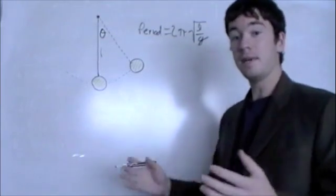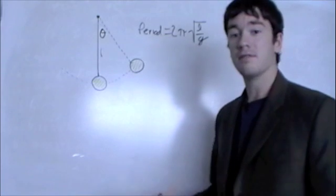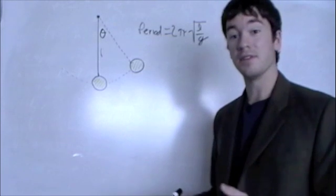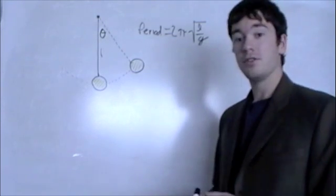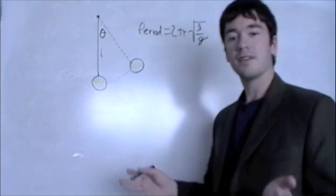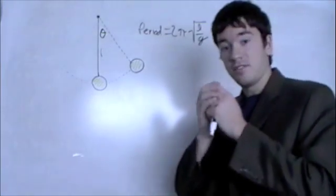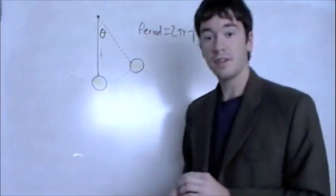That means that it's independent of the mass of this blob. You could have a block of lead there that weighs 100 pounds, and you could have a piece of cork there that weighs 1 pound. And as long as you assume that there's no other factors, such as drag or friction, they will have the same period as long as they're on the same length of string.